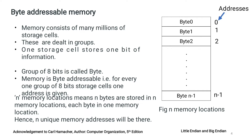Byte 0 is stored at address 0, byte 1 is stored at address 1, and byte 2 is stored at address 2. Byte n minus 1 means — since numbering starts from 0 — 0 to n minus 1 bytes means totally n bytes of data. There are n memory locations whose addresses range from 0 to n minus 1, with 1 byte stored in each, as shown in the figure.